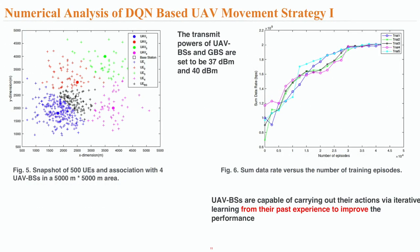At this moment, we can present the numerical analysis of the DQN-based UAV movement strategy. In our simulations, we have set the carrier frequency to 2 GHz and the maximum path loss to 103 dB. The TX powers of the UAV base stations and ground base stations are set to 37 dBm and 40 dBm respectively. The network structure is configured to have 2 input neurons in the input layer, 10 neurons in the hidden layer, and 5 neurons in the output layer. The movement step size of the UAV base stations is configured to be 1 meter. Figure 5 further shows the user equipment distribution and their association at one time instance.